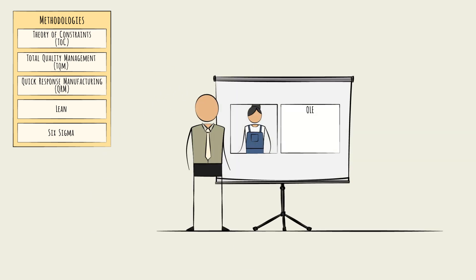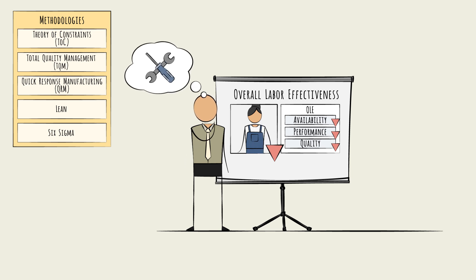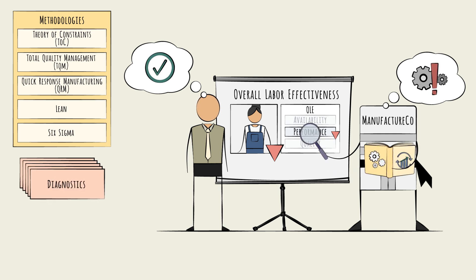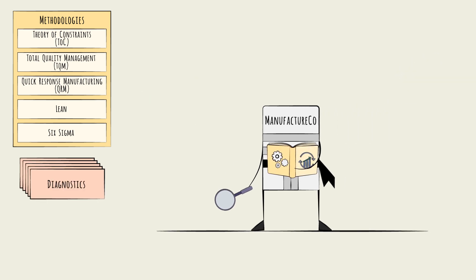Say that a manufacturing engineer notices that overall labor effectiveness, a function of availability, performance, and quality, is declining. Naturally, they want to fix things. One of the ways a company can apply an optimization methodology is to help diagnose the problem. Each school will take a unique approach here.